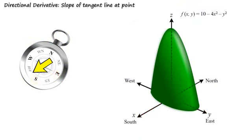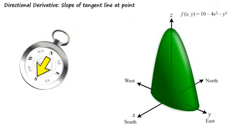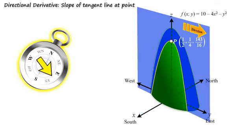As you might expect, two directions are particularly important, the positive x direction and the positive y direction. When in the direction of the positive x-axis, we call the directional derivative the partial derivative with respect to x. When in the direction of the positive y-axis, we call the directional derivative the partial derivative with respect to y.